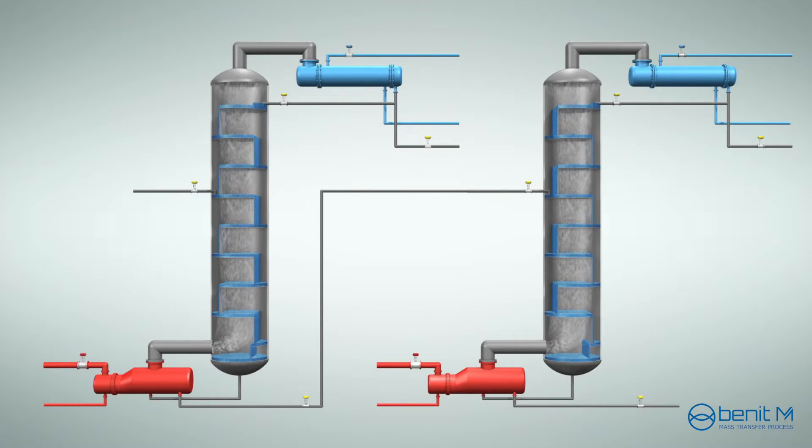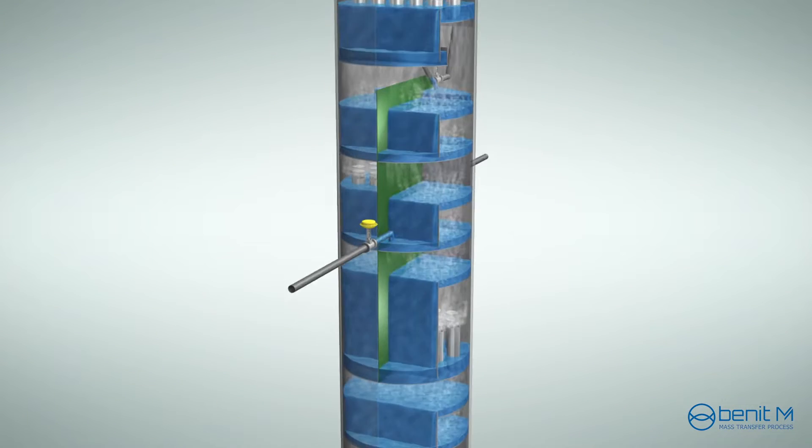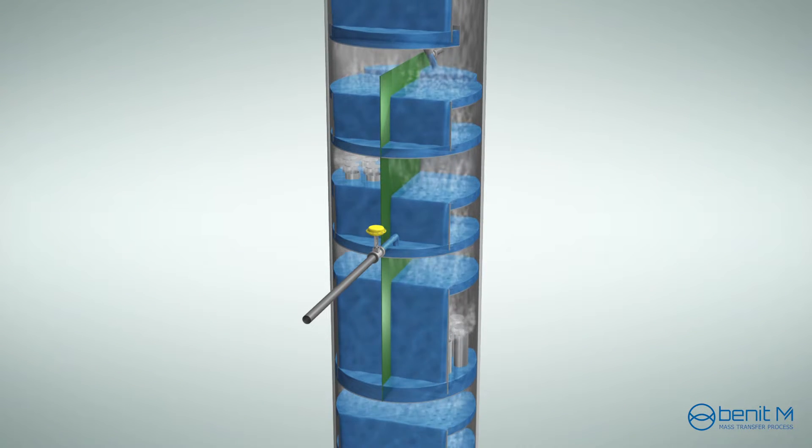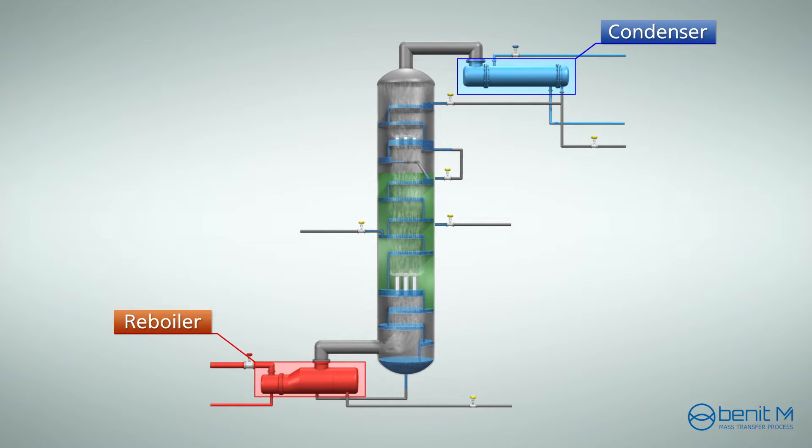Dividing wall column is one of the effective ideas saving energy for the distillation process. The same as the common distillation column, a dividing wall column has a reboiler and a condenser.